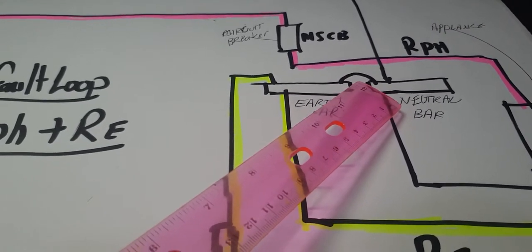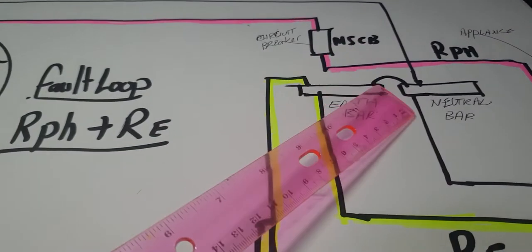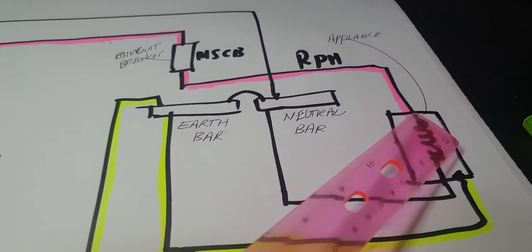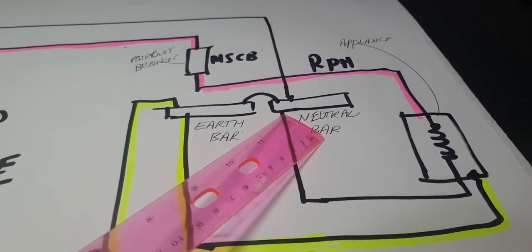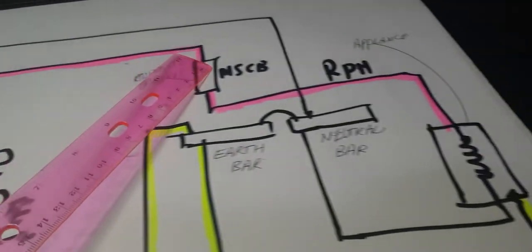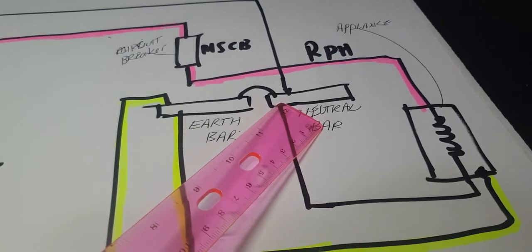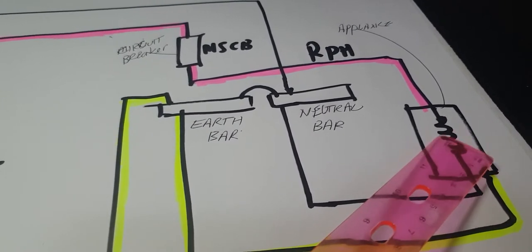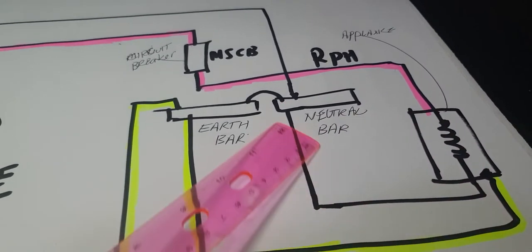When we talk about a fault current or loop circuit, basically the supply comes down through the fuse or the circuit breaker, down through to the appliance, down through the element, back down via the neutral, comes back, goes back up around through here, back down and around. We get this continuous consumption of electricity if my appliance is working perfectly.